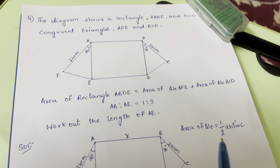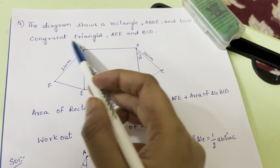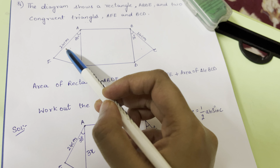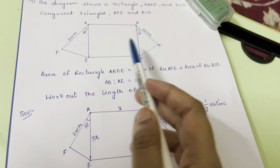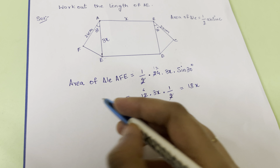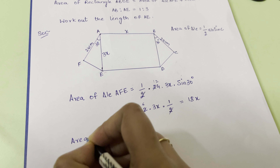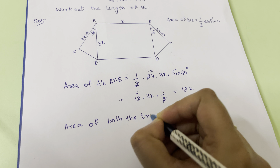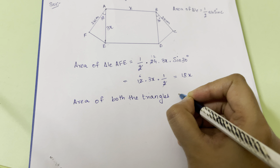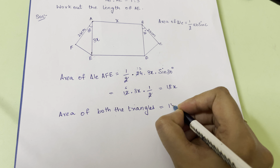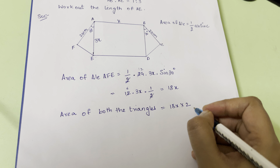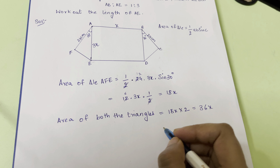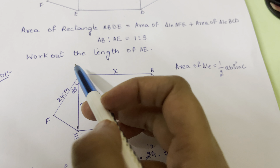Since triangles AFE and BCD are congruent, their areas are equal. The area of both triangles combined equals 18x × 2 = 36x.